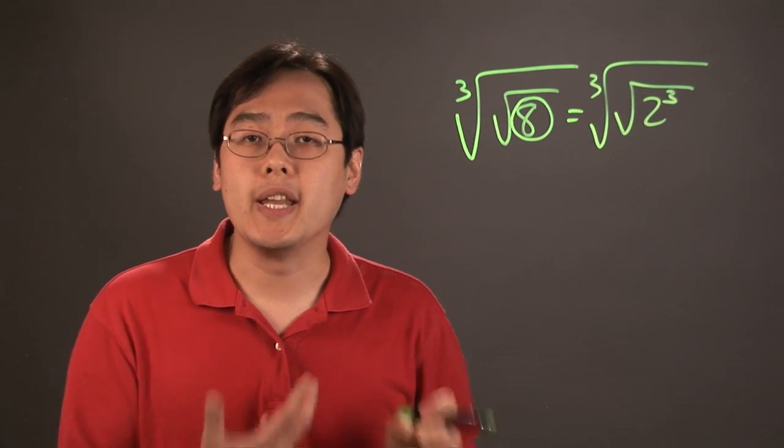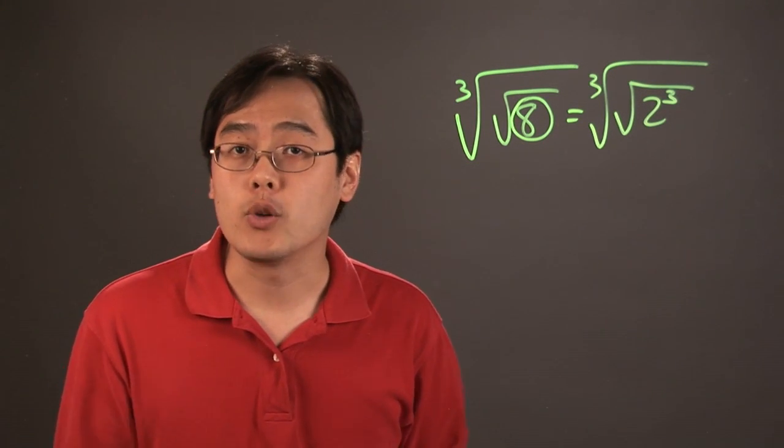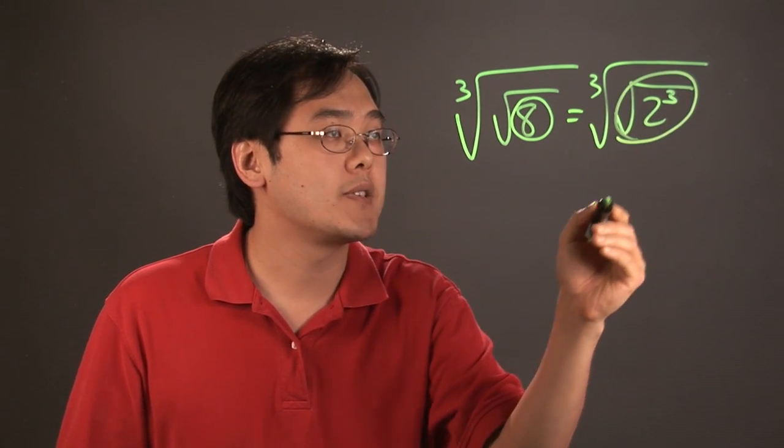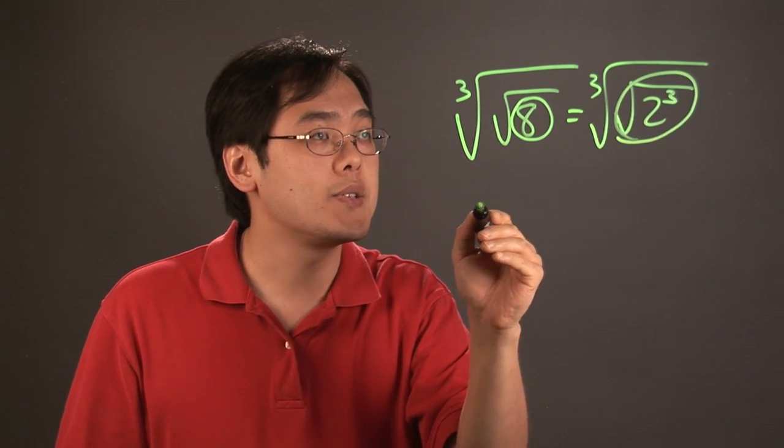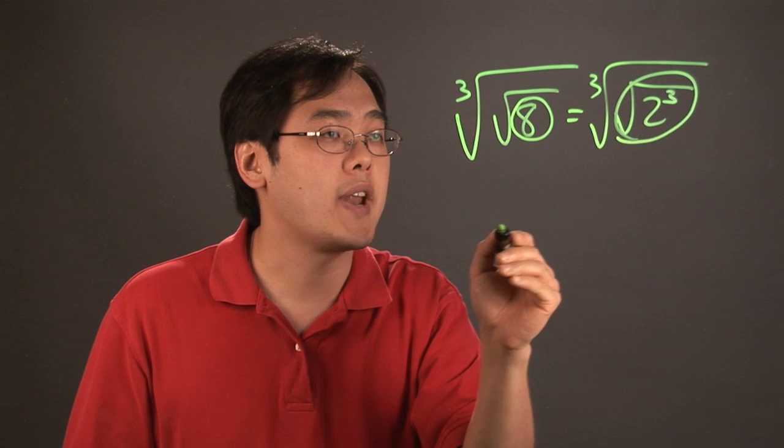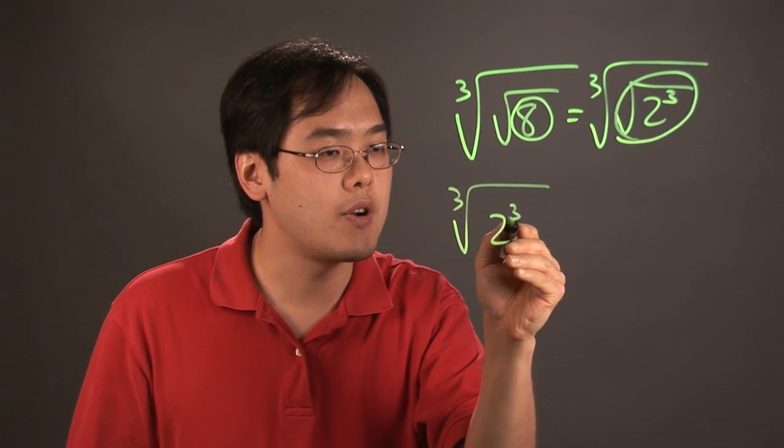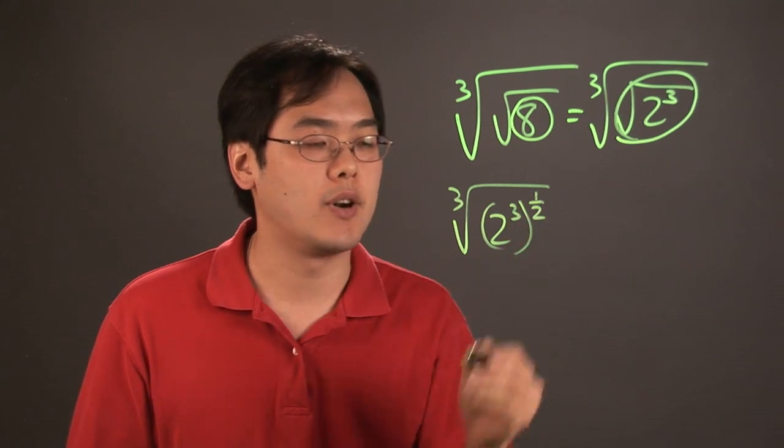Now radicals can be made easier by rewriting the radicals as exponents as well. So what we want to think about is rewrite this as 2 to the third to the one-half power. So you have cube root of 2 to the third to the one-half power.